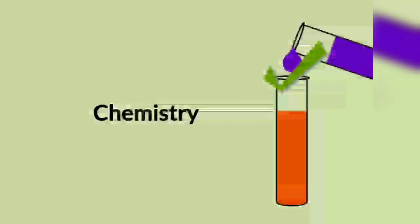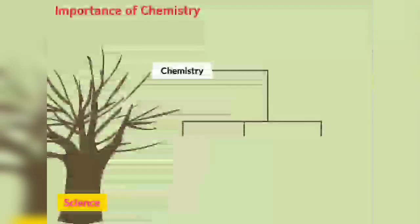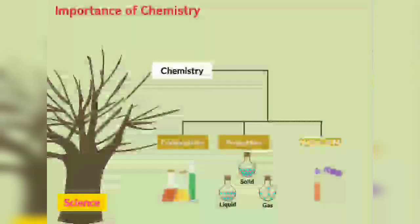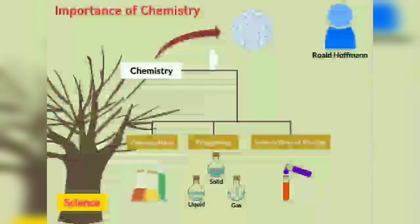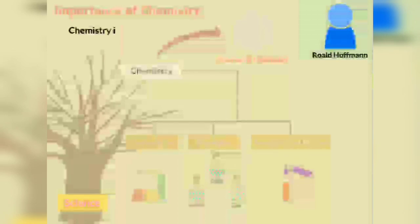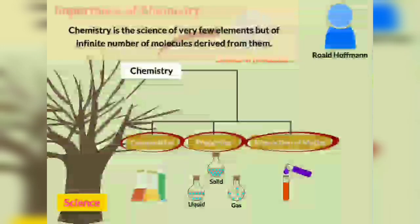Yes, you are right, but only up to some level — the scope of chemistry is vast. Chemistry is a branch of science that focuses on composition, properties, and interaction of matter. Roald Hoffman defined chemistry as the science of molecules and their transformations, and stated that chemistry is the science not of a very few elements, but of an infinite number of molecules derived from them. If you study more deeply, you will find that chemistry deals mainly with composition, properties, and interaction of matter. That is why we call chemistry the science of atoms and molecules.